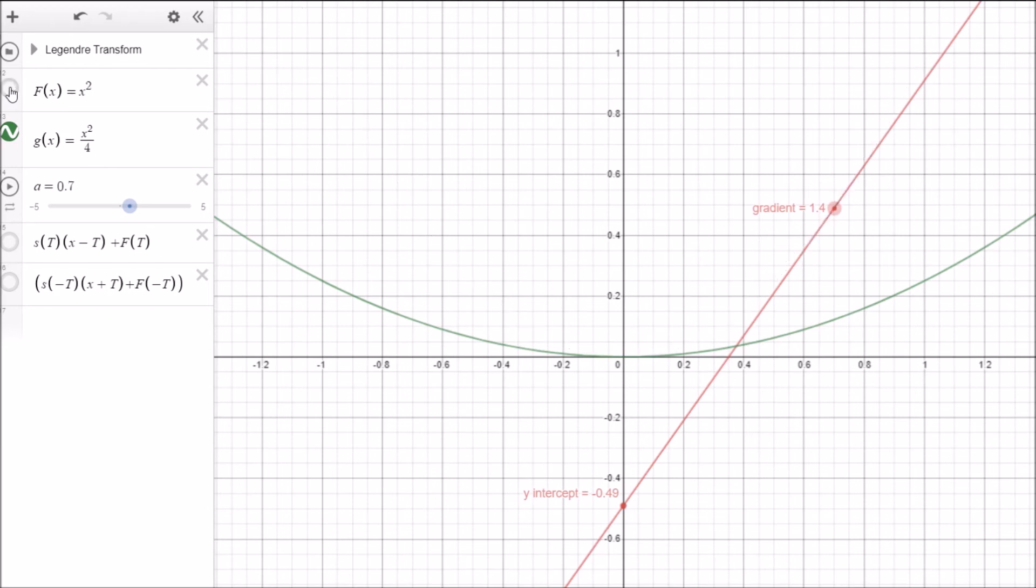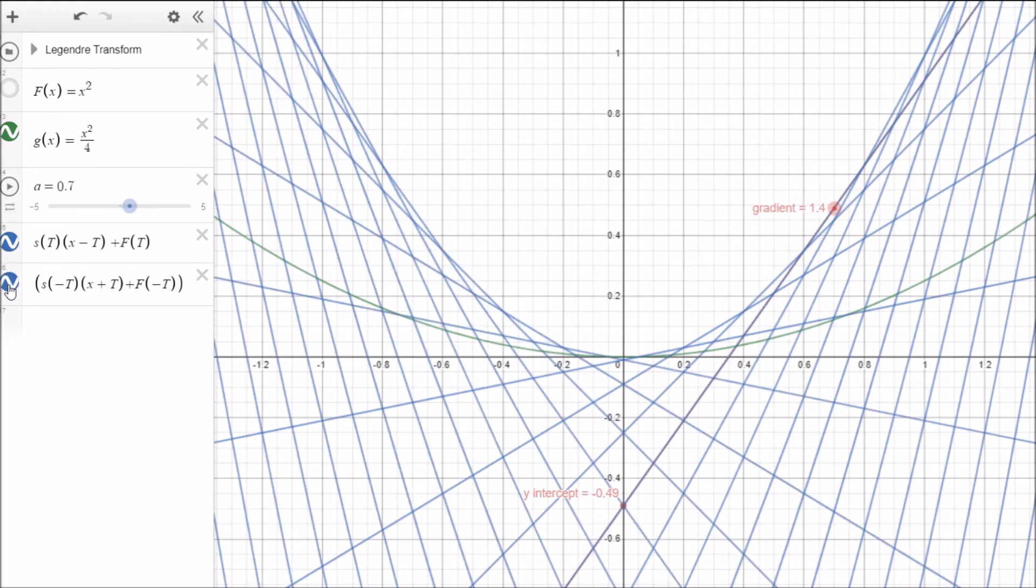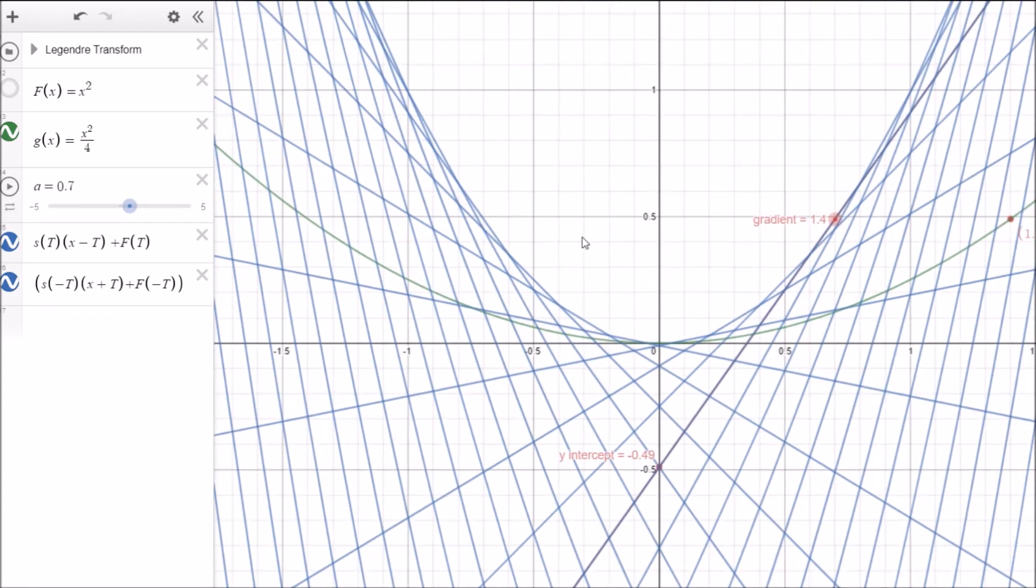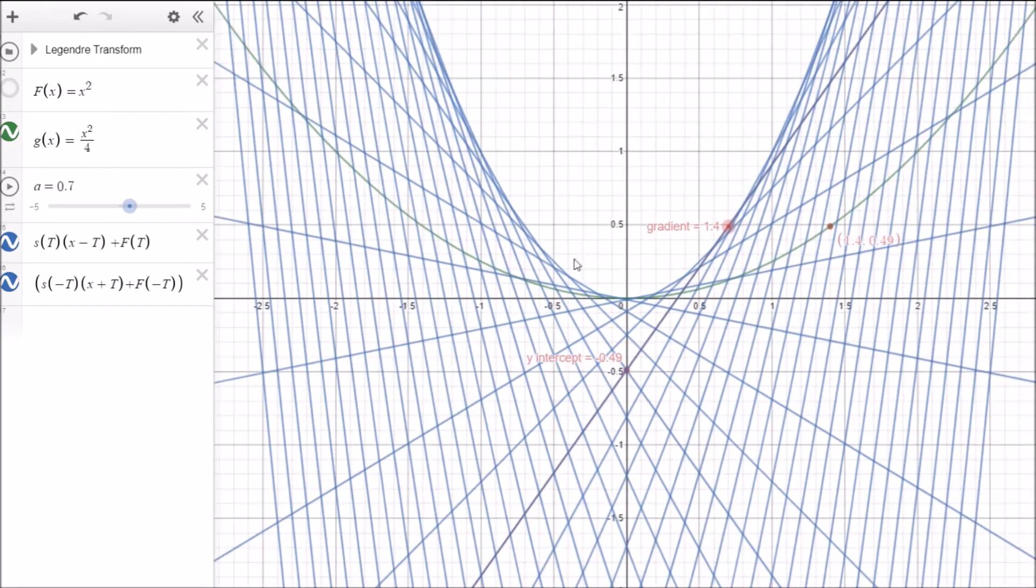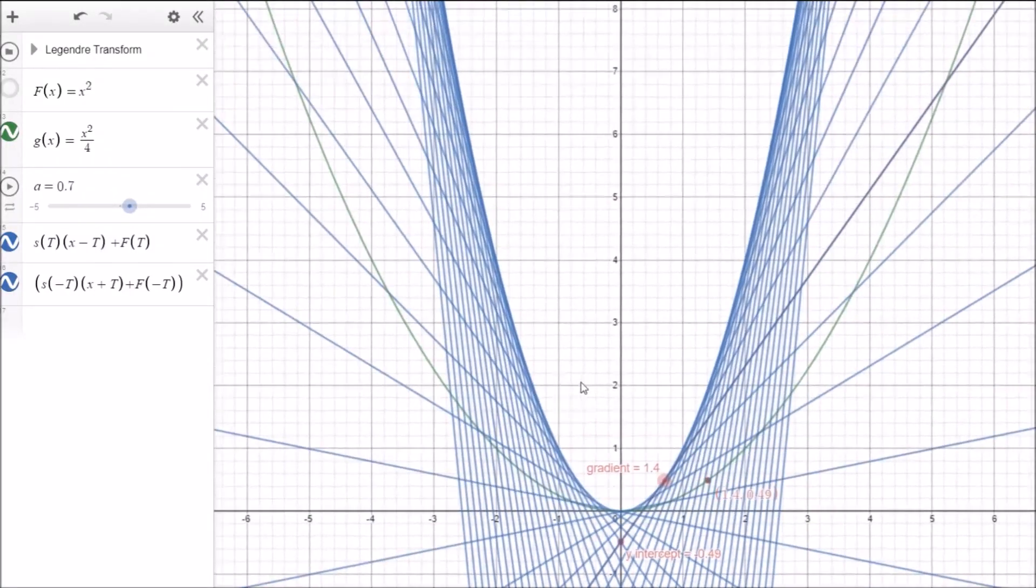So what we'll do is we'll get rid of the original function. So that's the original function going. And we'll add in lots of different tangent points to that function. So we could add a few in here. So that's in the right-hand side and also in the left-hand side. So you can see here that the envelope of all of these tangents is going to be able to regenerate our original function, which is y equals x squared. And of course, the more and more of these tangents we add, the more precise the approximation is to our original function.